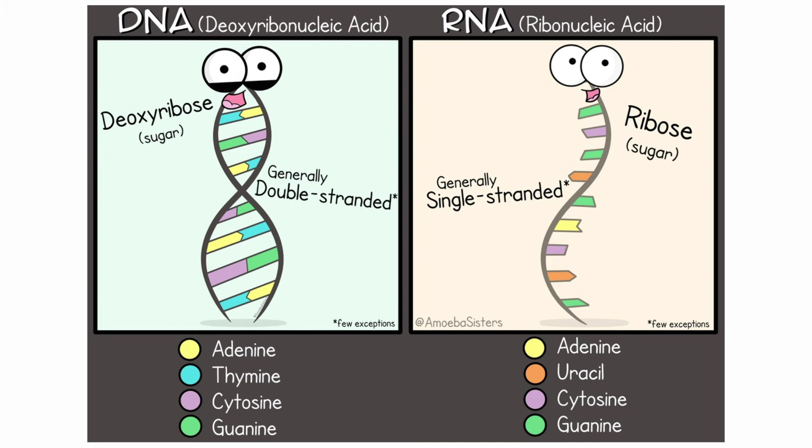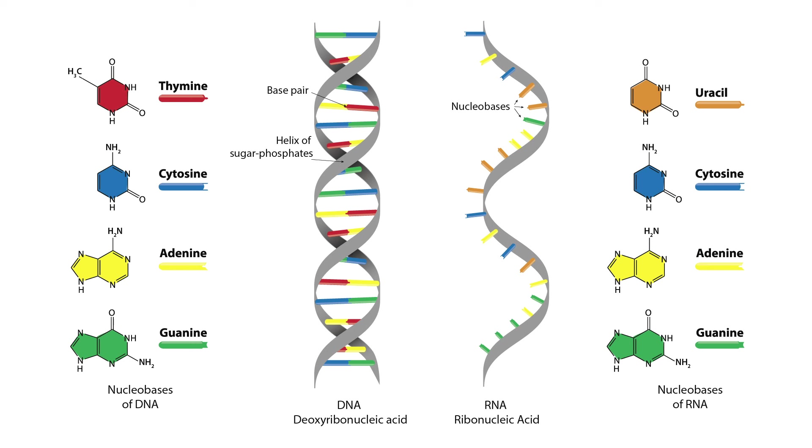In RNA, instead of thymine you have uracil, so A binds with U and C binds with G. The other major difference is the sugar — DNA has deoxyribose sugar, whereas RNA has ribose sugar. DNA is a double helical structure, whereas RNA is typically a single strand. There are certain modifications; for example, tRNA has a different kind of arrangement.